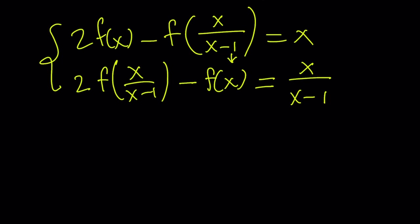So that would make sense if I can get rid of this expression right here. Notice that the coefficient of f of x over x minus 1 is 2 in the bottom equation, and in the top equation its coefficient is negative 1. So that tells me to multiply the top equation by 2.